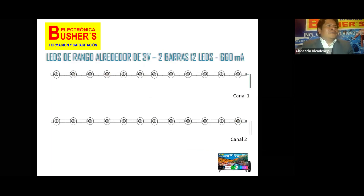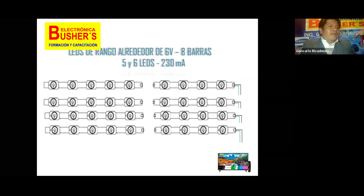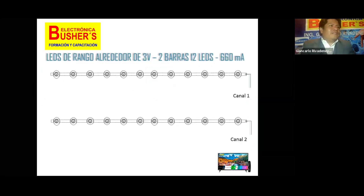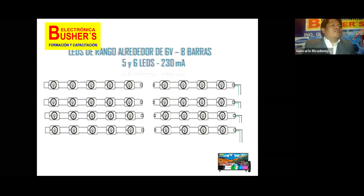Tenemos un televisor 4K que tiene dos tiras o dos barras de 12 LEDs, y por ambas tiras circula a 660 miliamperios. Estamos hablando de un LED de alto brillo. Los LEDs que tenemos disponibles para reemplazar son de 6 voltios, a diferencia del anterior que es de 3 voltios. Tenemos ahora LEDs de 6 voltios, con 8 barras: un grupo de barras de 5 legs y otro grupo de barras de 6 legs. La primera pregunta es: ¿cómo la adaptamos? Si la anterior tira era de 3 voltios, esta es de 6.